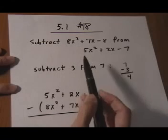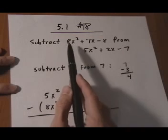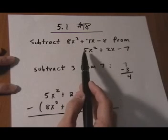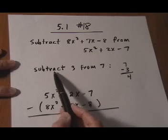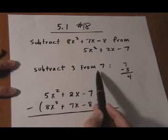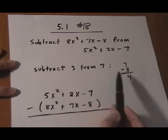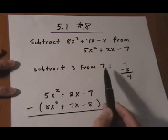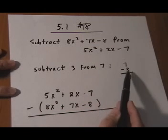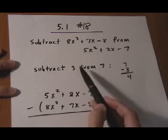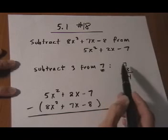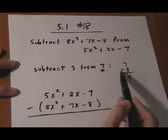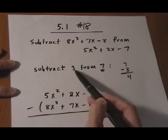Now the most common mistake here is to subtract these in the wrong order. So let's think about a different question: what would we get if we subtracted 3 from 7? Well, that would give us 4 because we do 7 take away 3. Notice that the second number that was mentioned is the one that goes on top — we're subtracting the first number from it.